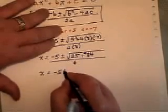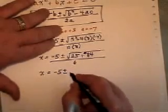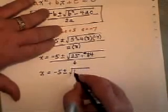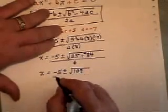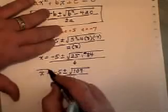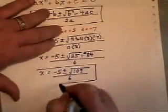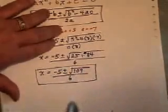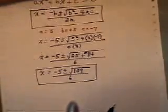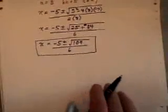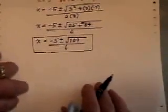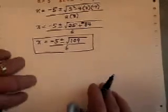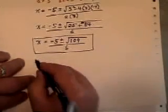We now have negative 5 plus or minus the square root of 109 over 6. Many times you can leave your answer just exactly like that and it's okay. If the question says find it to 3 decimal places or something like that, then here's how you'd have to work it out.